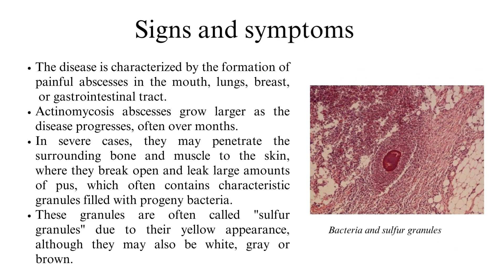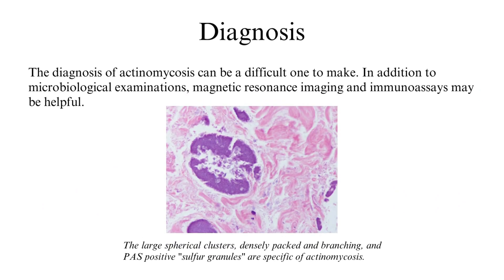Signs and symptoms include formation of painful abscesses in the mouth, lungs, breast, or gastrointestinal tract. Actinomycosis abscesses grow larger as the disease progresses, often over months. In severe cases they may penetrate surrounding bone and muscle to the skin, where they break open and leak large amounts of pus which often contains characteristic granules filled with progeny bacteria — often called sulfur granules due to their yellow appearance, although they may also be white, gray, or brown.